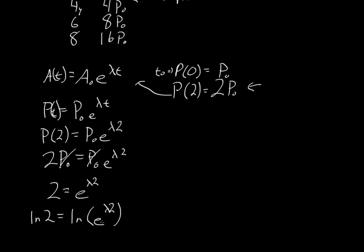Well, the natural log of e to the 2 lambda is simply 2 lambda. Therefore, lambda equals the natural log of 2 over 2.